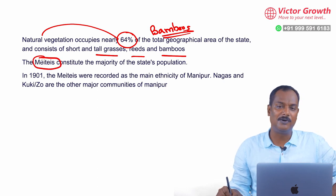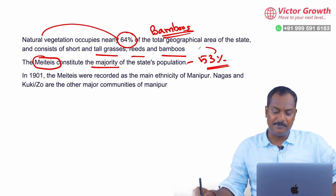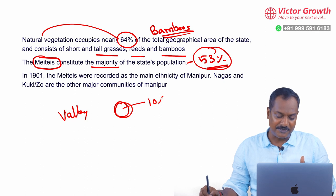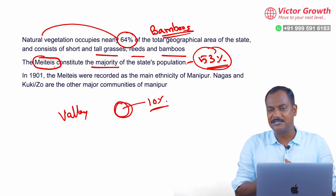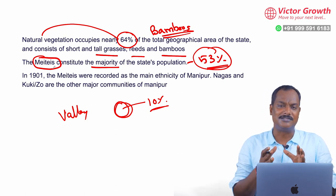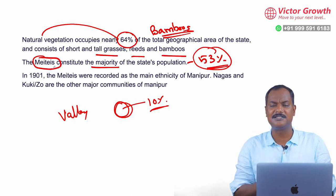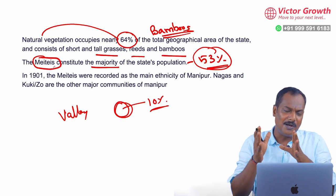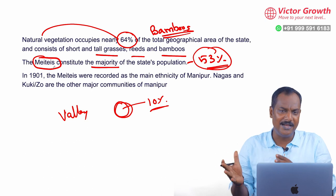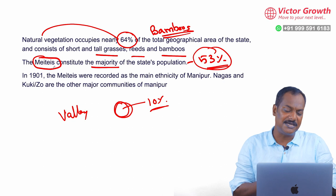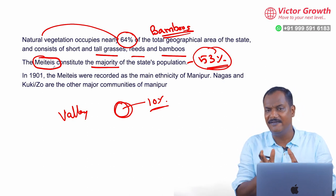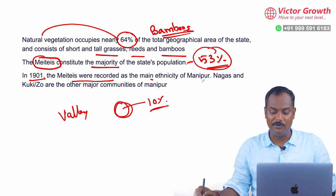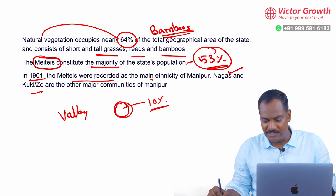Now, coming to the real problem. Meiteis, who are the original people of Manipur, constitute the majority — approximately 53% of the total population. But the problem is they are in the valley, which is only 10% of the area. The current problem happening in Manipur is that the High Court of Manipur and the government of Manipur are going to award Scheduled Tribe status to the Meiteis, according to which they will be able to buy land in the hilly area occupied by other tribes like Kukis, Chin and Mizo. The Kukis don't want the Meiteis to come to the hilly area or buy land there. That is why the riots are happening. Meiteis contribute 53% of the population but live in only 10% of the total area. Nagas and Kukis are the other major communities in Manipur.